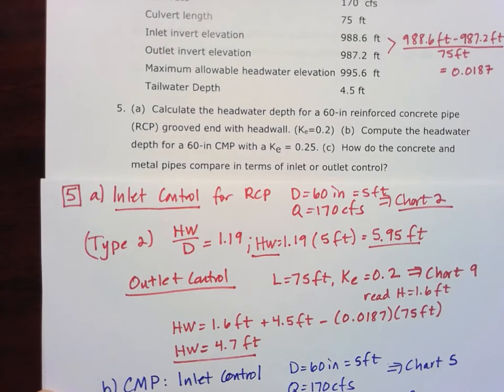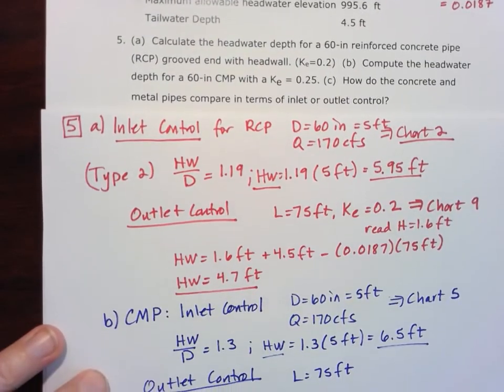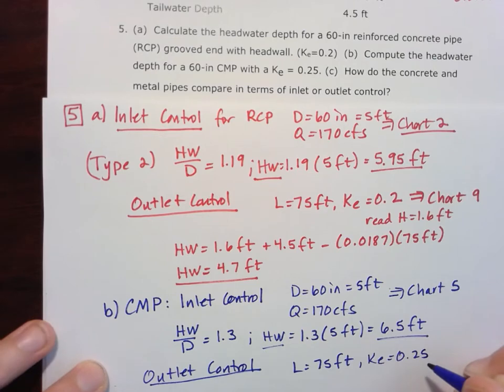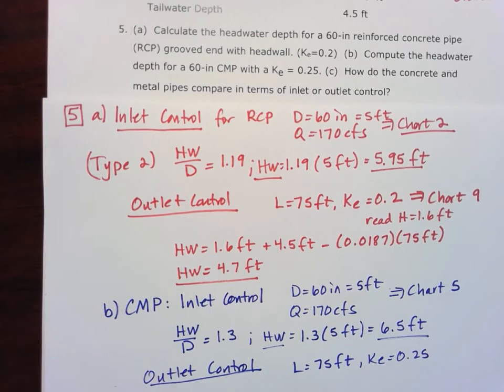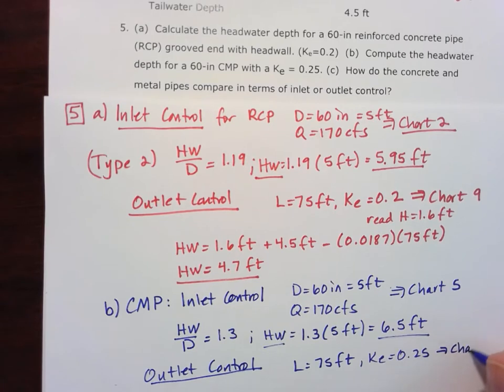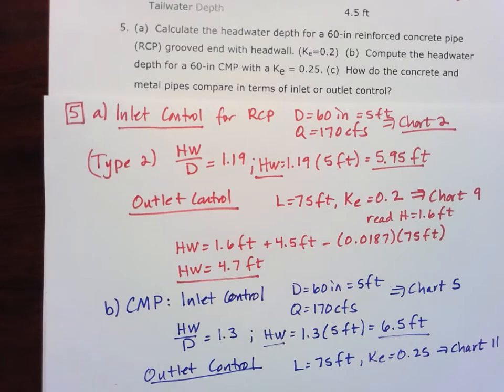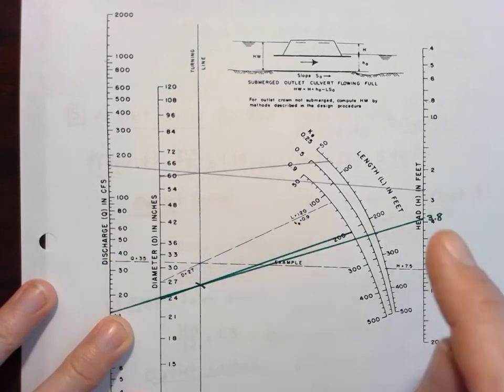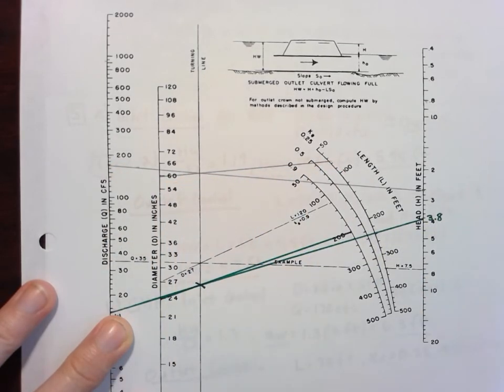Let's try outlet control for that same pipe. Remember, we still have that length equal to 75 feet, but my KE now is the 0.25. And so for outlet control for the corrugated metal pipe, I'm going to need chart 11. So let's take a look here at what's happening on chart 11.